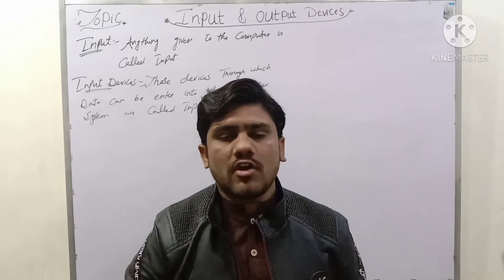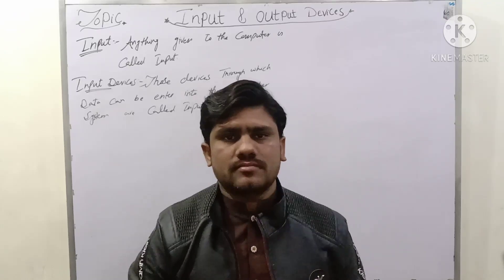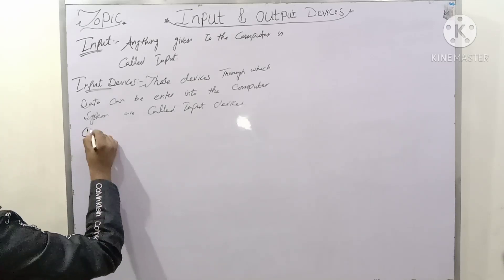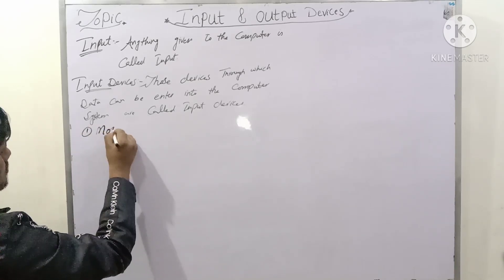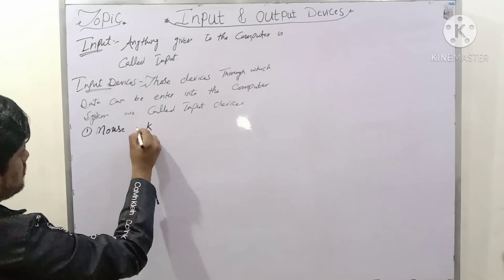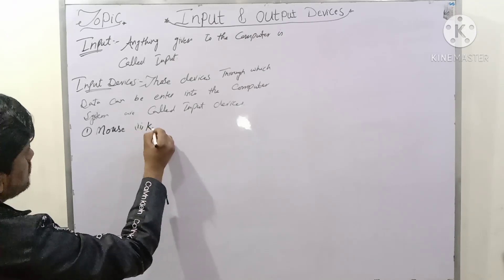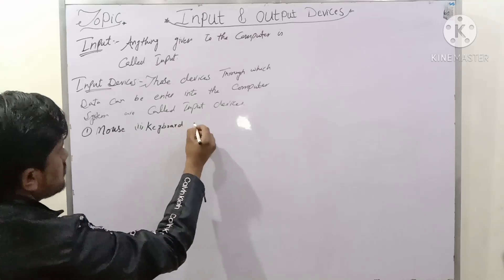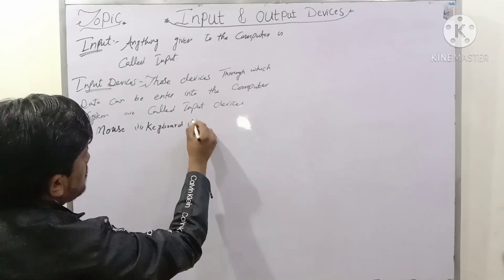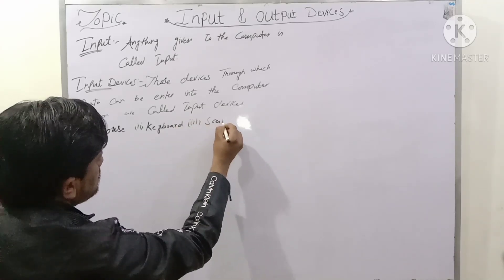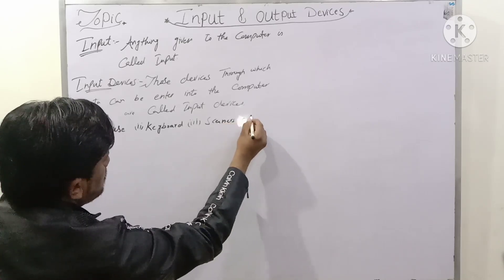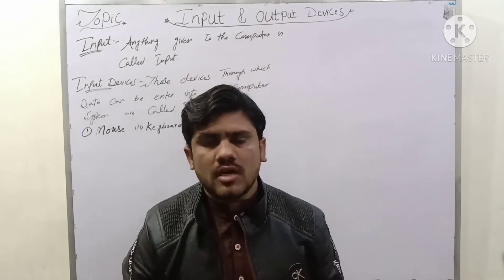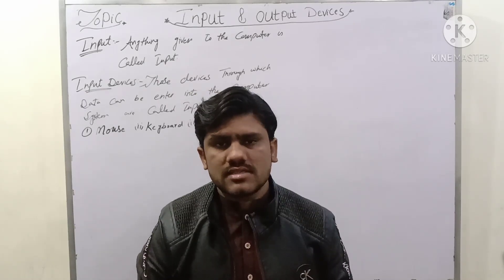Input devices are those devices through which data can be entered into the computer system. For example: mouse, keyboard, and scanners. Now we will discuss each one of them — mouse, keyboard, and scanners.